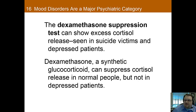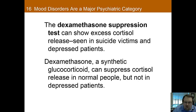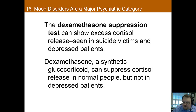Related to this, the dexamethasone suppression test can show excess cortisol release, which is seen in suicide victims and depressed patients. What dexamethasone does is try to trick the body into thinking there are already high levels of stress hormone. Interestingly, people who are depressed keep producing more cortisol, whereas people who are not depressed do show a suppression of cortisol.